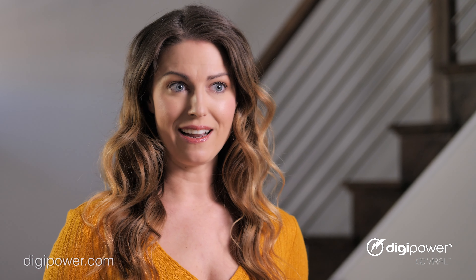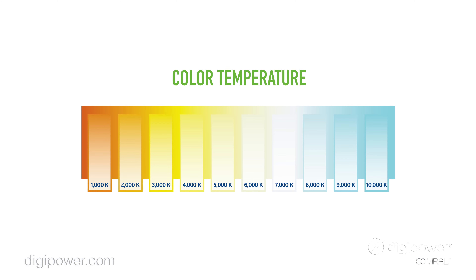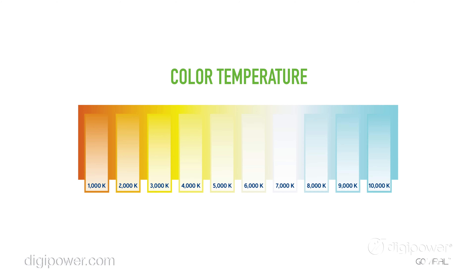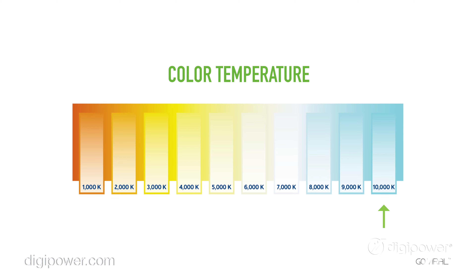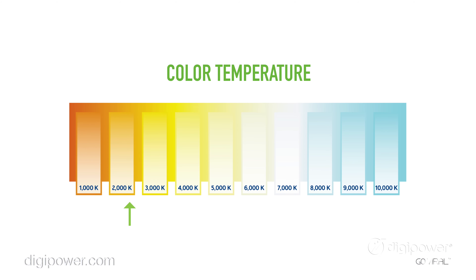Many of our lights allow you to dial in your desired color temperature. But what is color temperature? Color temperature is measured in Kelvin and reflects warm, cool, and neutral tones. The higher the color temperature, the cooler the light will be. As for the lower ranges, they produce a warmer feel.